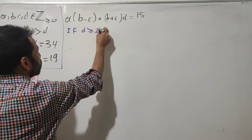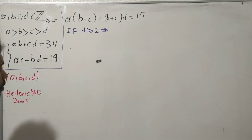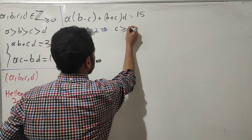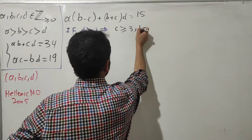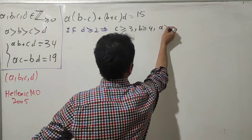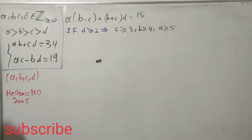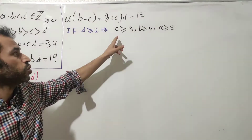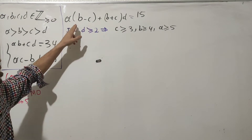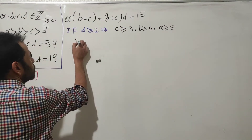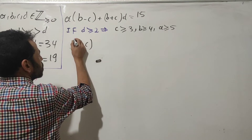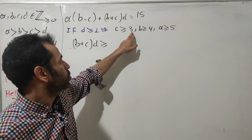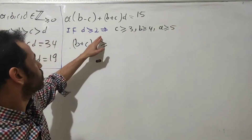Now consider what happens if d ≥ 2. If d ≥ 2, then c ≥ 3, b ≥ 4, and a ≥ 5, because d is the smallest integer and a is the largest. Collecting this information: (b + c) multiplied by d is at least (3 + 4) × 2 = 14.